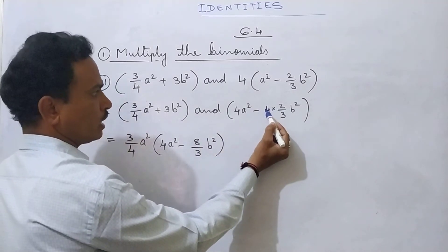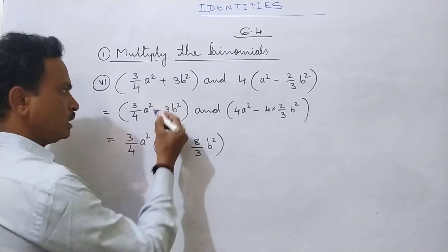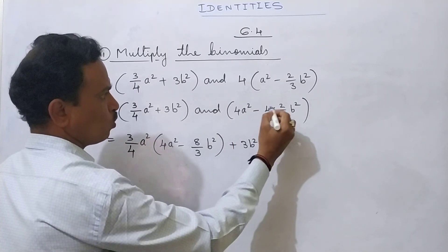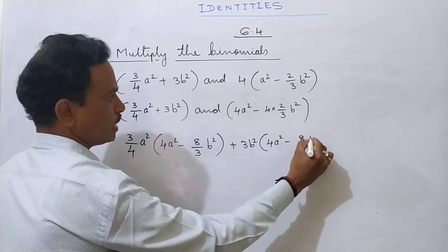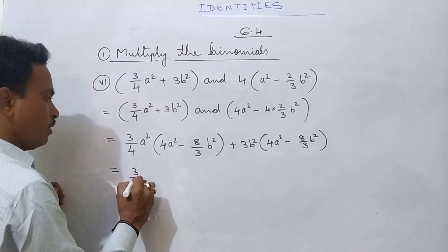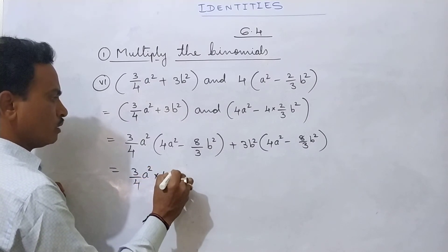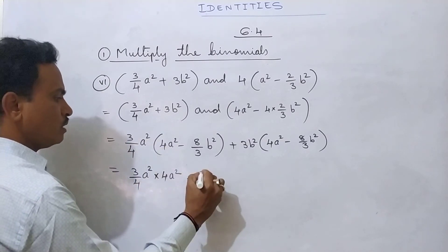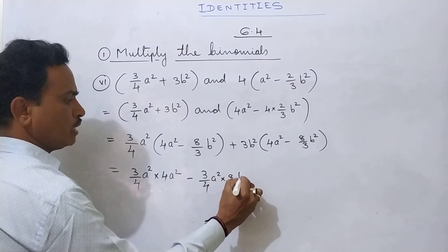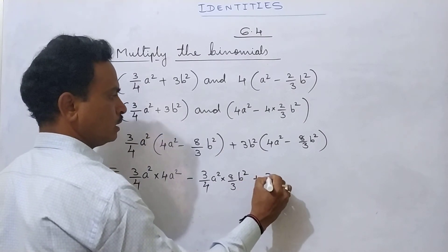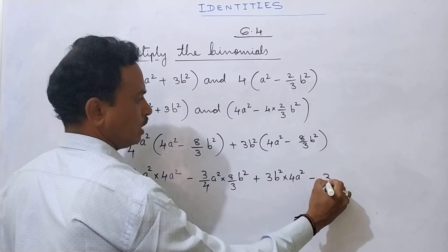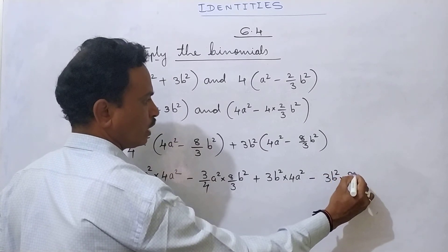So multiply directly: 3/4 a² times 4a², then minus 3/4 a² times 8/3 b², then plus 3b² times 4a², then plus into minus, minus 3b² times 8/3 b².